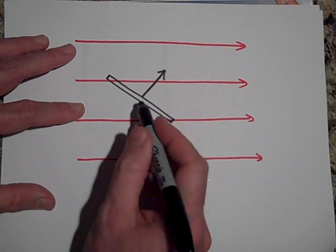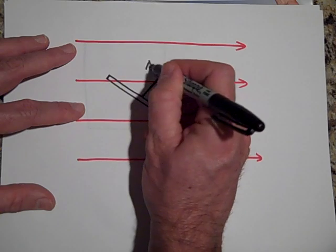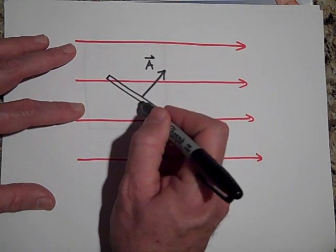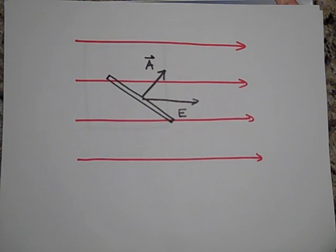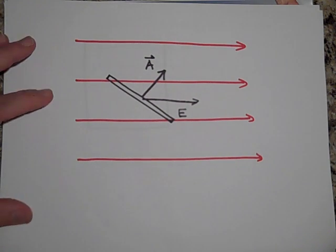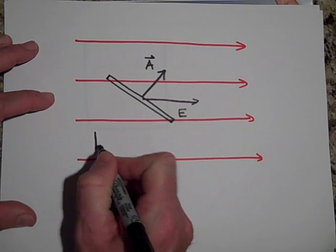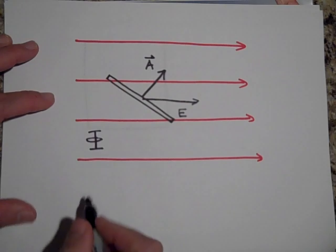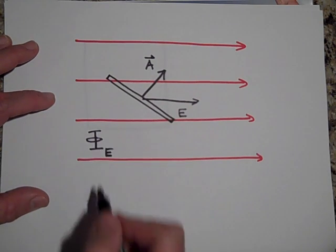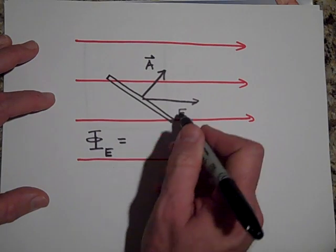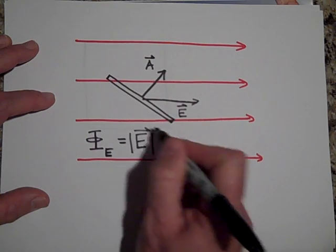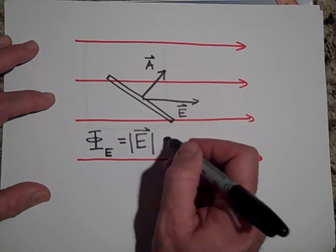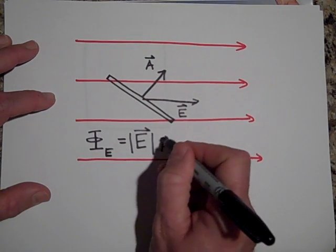I'm going to call the vector A for area. I'm going to say that it's always normal to the surface. So here's A and here is E. E at this location is this way—that's the electric field. So this is the equation for finding flux. We're going to call it phi sub E, that's electric flux, and it's equal to E—how much E you have, the magnitude of that—times the area of the window, how big the area is.